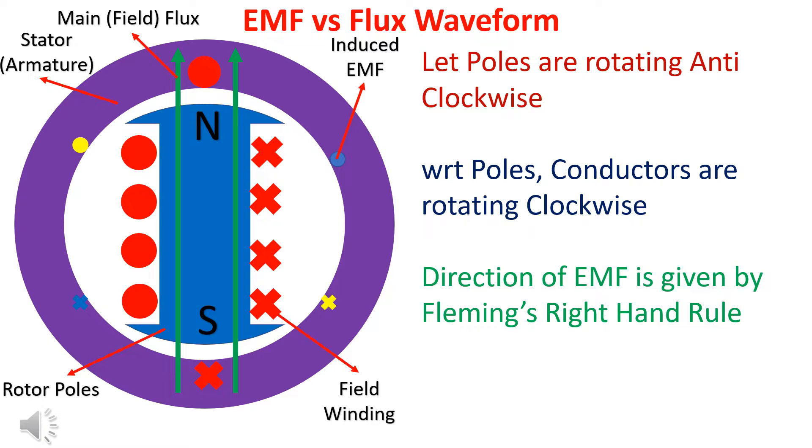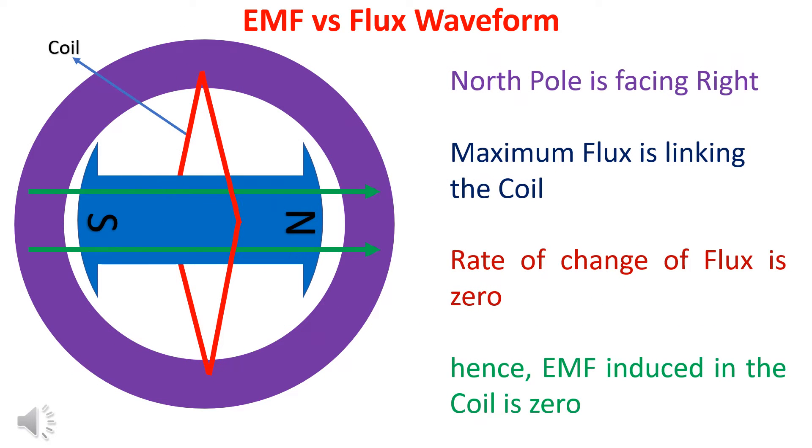The concept is further explained with the help of a synchronous generator. Poles are rotating anti-clockwise. With respect to poles, conductors are rotating clockwise. Applying Fleming's right-hand rule, the direction of EMF in the top conductor is outside and in the bottom conductor is inside. In the case shown, maximum flux is linking the coil, but dφ/dt is zero. Hence, EMF is zero.